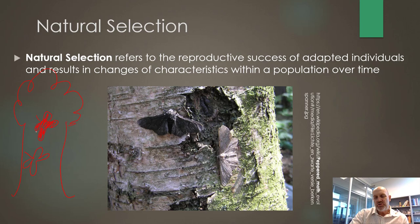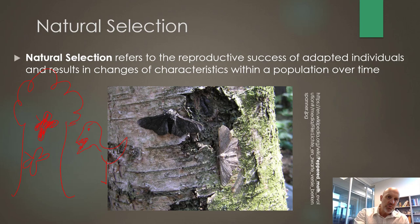Think about it — if you were living on that white tree, which color moth would you want to be? The answer is white, because birds come along and want to eat the moths they can see. The ones they can see are the black ones, because the white ones are camouflaged. Over time, the population of black moths decreases.